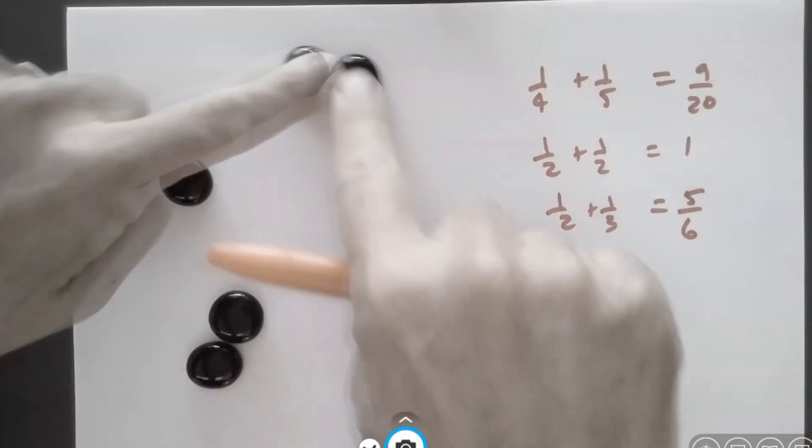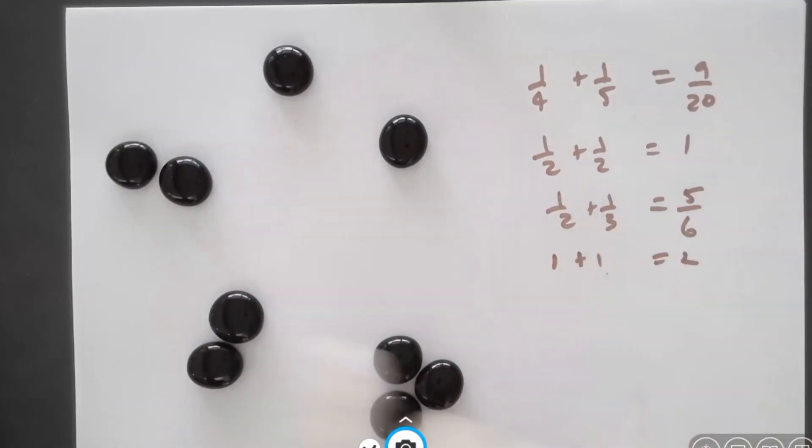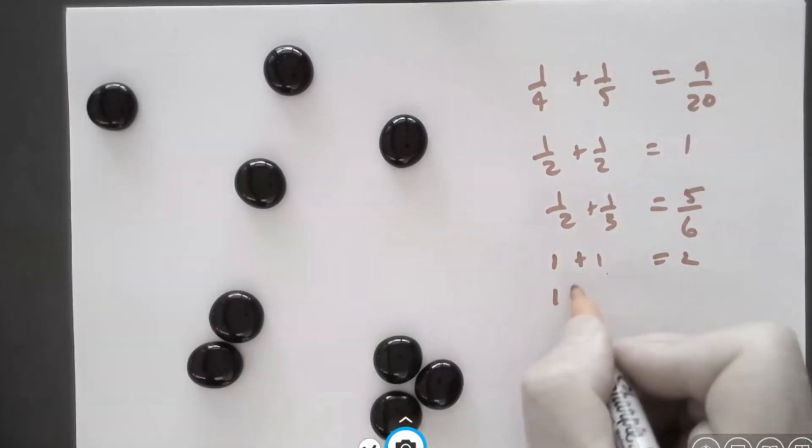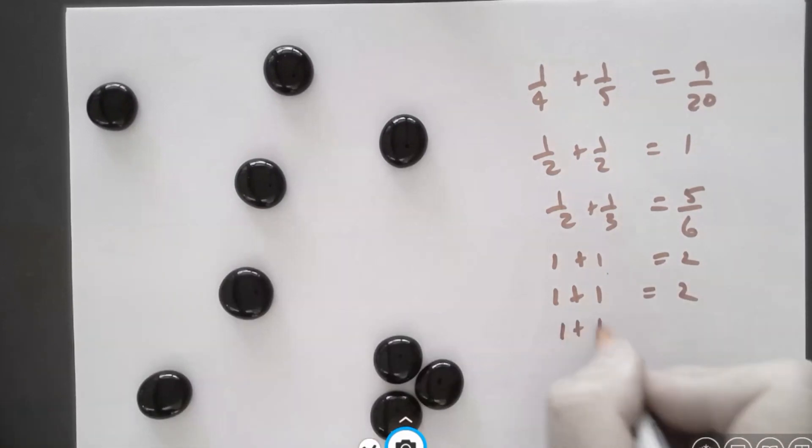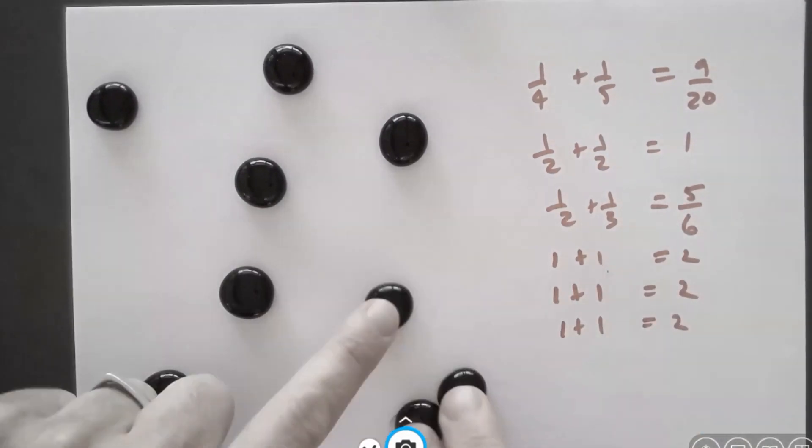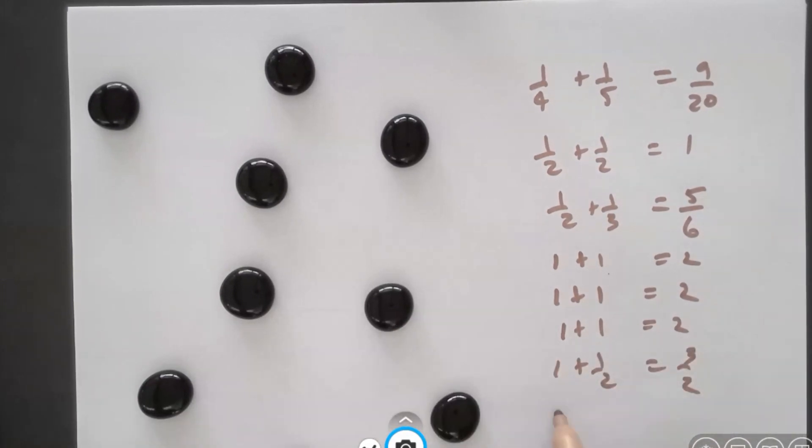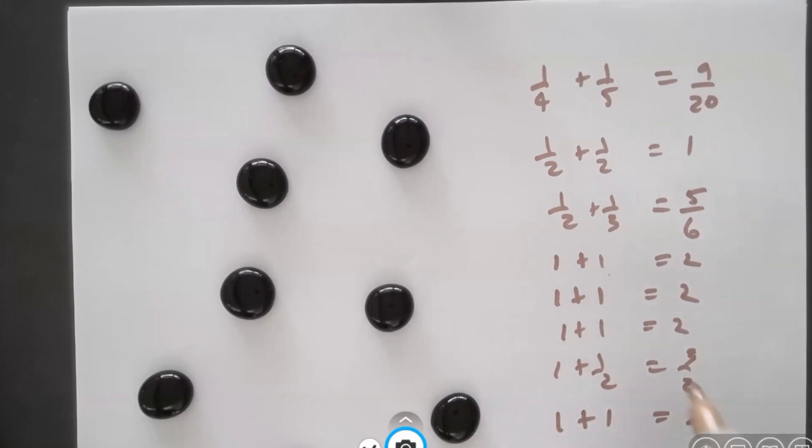Split the two into one and one. 1/1 plus 1/1 is two. Split two into one and one. 1/1 plus 1/1 is two. Split two into one and one. 1/1 plus 1/1 is two. Oh, three, now something interesting. 1/1 plus 1/2 is 3/2. And final two, 1/1 plus 1/1 is another two.